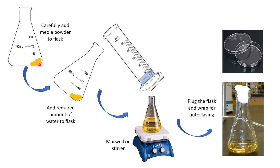After adding the powder into the flask carefully, add the required amount of water. Measure sterile distilled water or demineralized water — whichever is available — using a clean measuring cylinder, then add it by tilting the flask. Tilting is important because some powder tends to stick to the side walls of the flask, and the water will wash it down during addition.